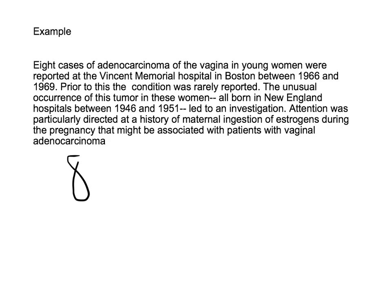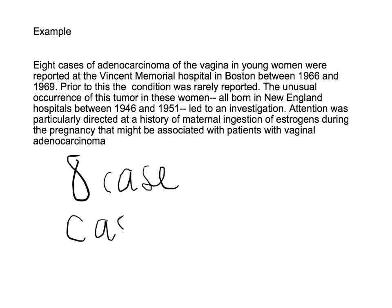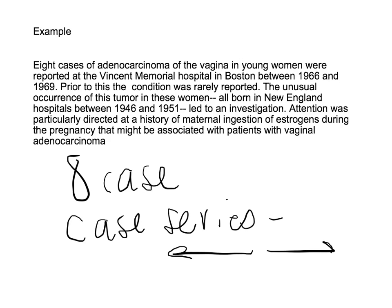So what we have are eight cases, and what we do not have is any controls. We have no randomization. We have what is really basically known as a case series. These cases can be looked at in depth to understand both retrospectively — we can find out about their mother's ingestion of estrogen — and we can also look forward in time. But we have nobody to compare them to, so there is no statistical analysis that can be done. These are very important for hypothesis generation and investigating rare diseases, and they are inexpensive.